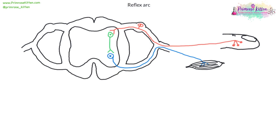This is a reflex arc. One of the more popular questions on reflex arcs is a flow diagram of the order in which things happen. So I'm going to label them quickly.